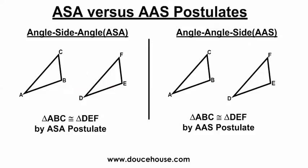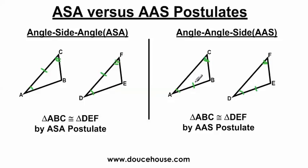The key difference between ASA and AAS: in ASA, the side is between the two angles — it's an included side. In AAS, the side is not between the two angles — it's a non-included side. So there is a subtle difference, so be careful.